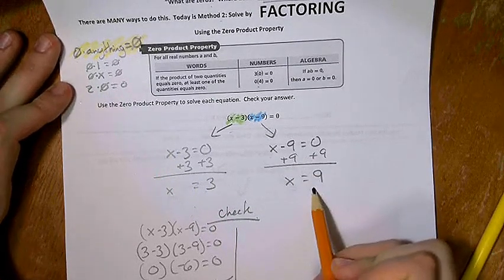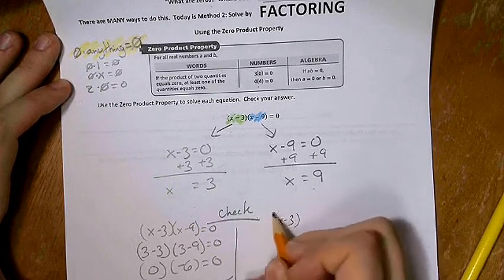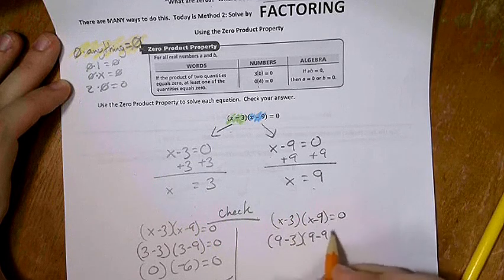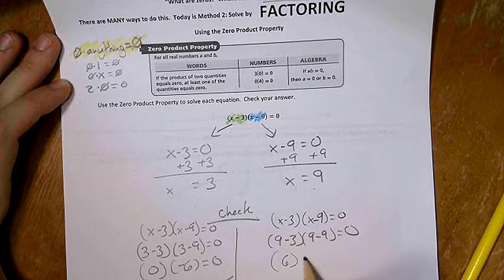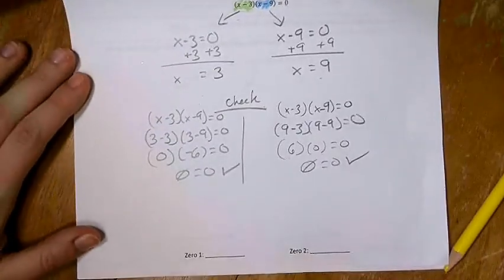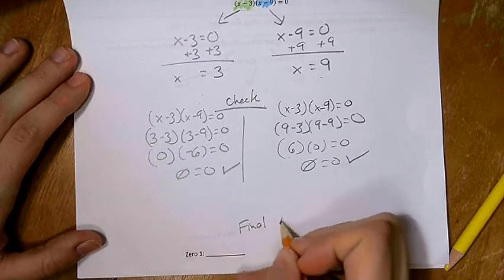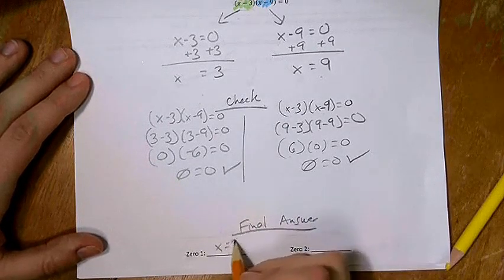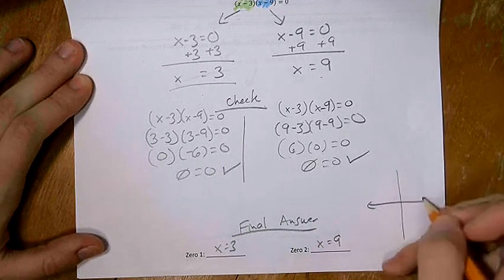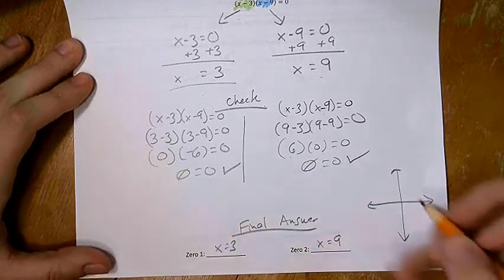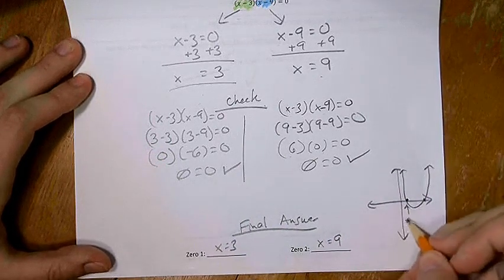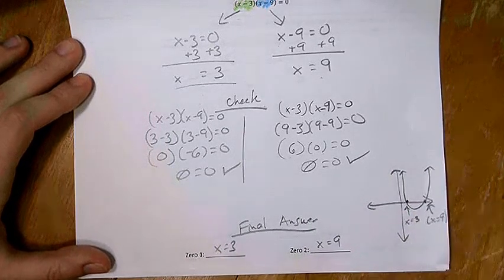Let's check for x equals 9. We have (9 minus 3)(9 minus 9) equals zero. Nine minus three is positive six, nine minus nine is zero. Six times zero is zero, so yes, that works as well. Our final answer, our zeros, is when x equals 3 and when x equals 9. On a graph, the parabola is going to cross where x is equal to 3 and where x is equal to 9.